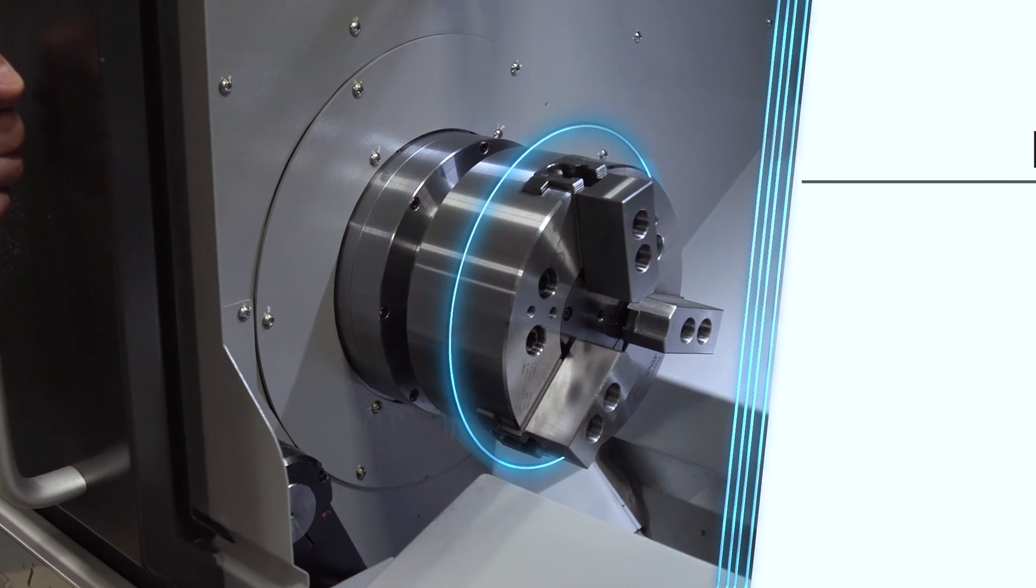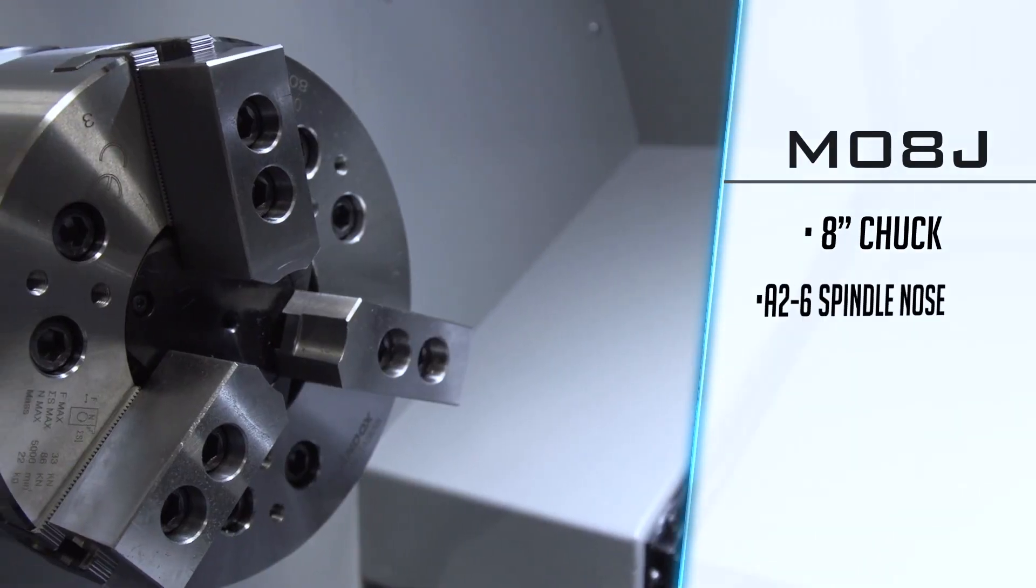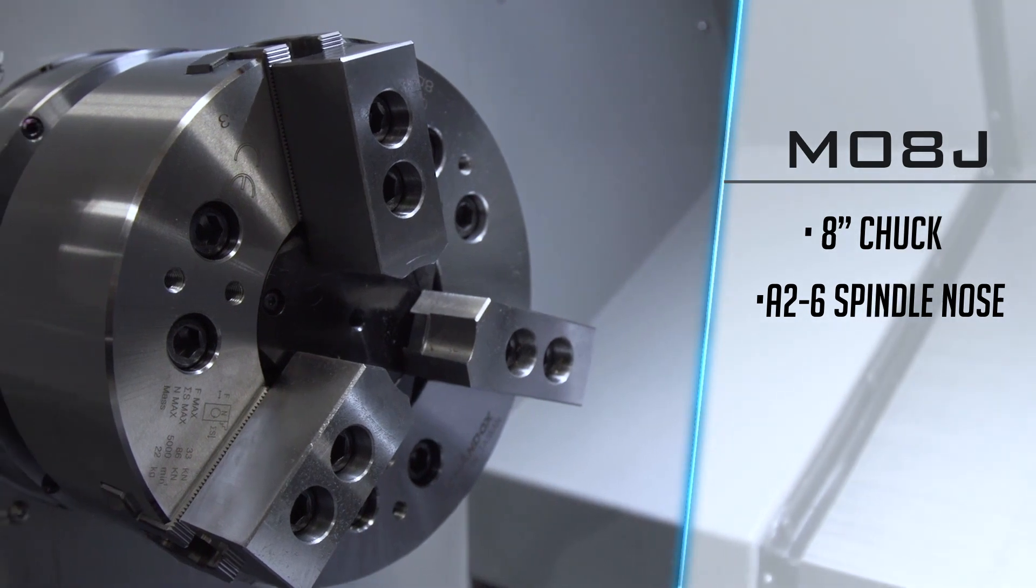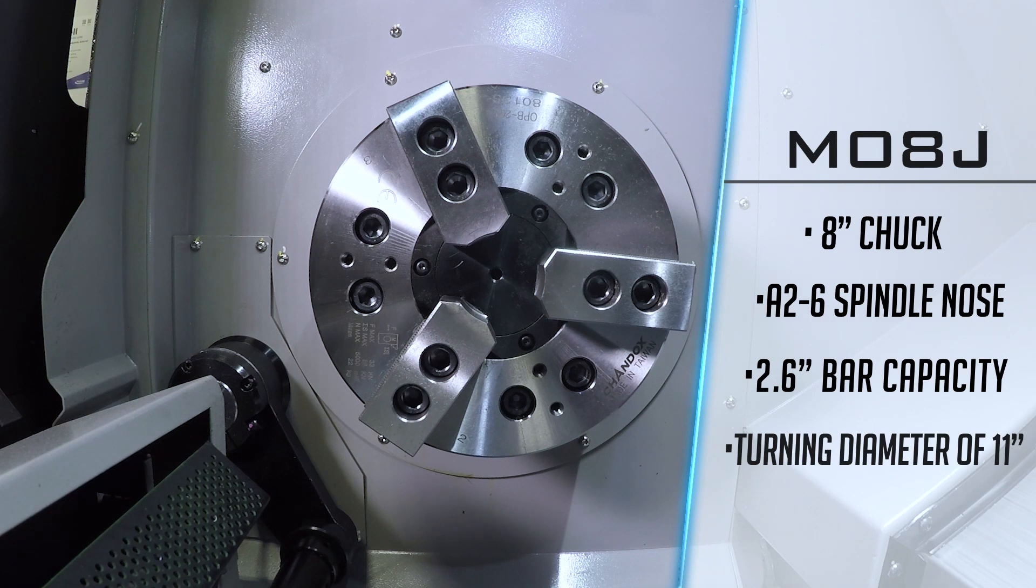The M08J is equipped with an 8-inch hydraulic automatic chuck mounted to an A2-6 spindle nose and provides up to 2.6 inches of bar capacity and a max turning diameter of 11 inches.